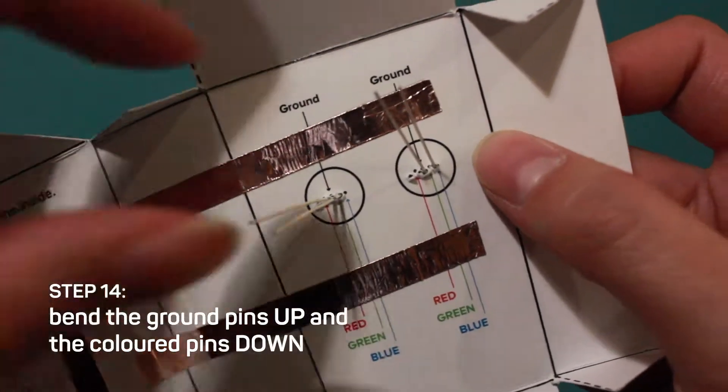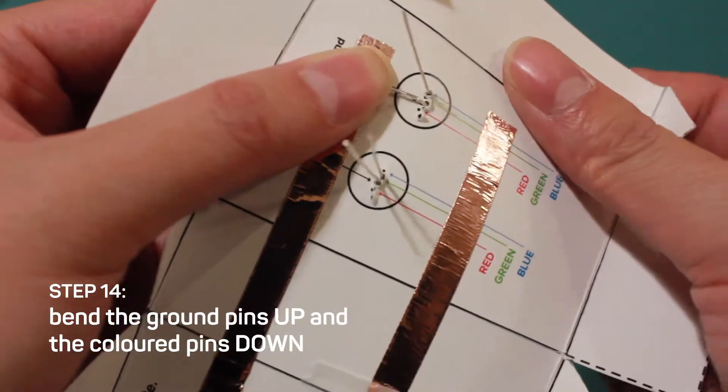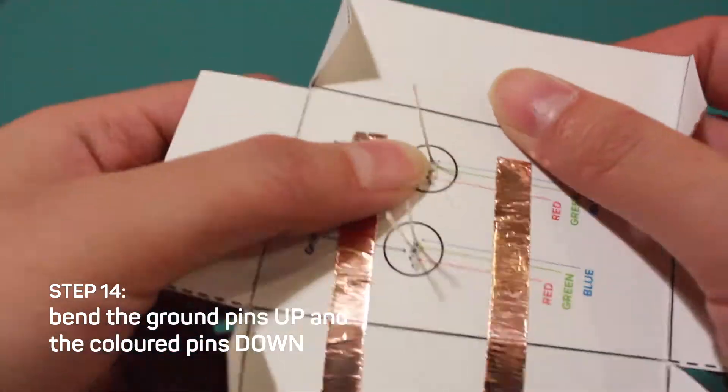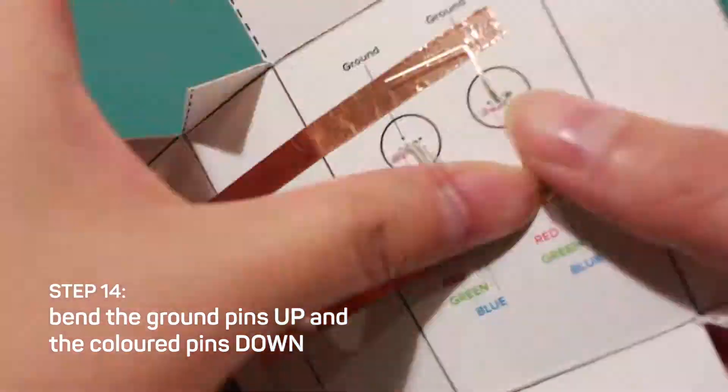Step 14, bend the ground pins of your LED up so they're following the negative path of your circuit, and bend the colored pins down so they're following the positive path of your circuit.